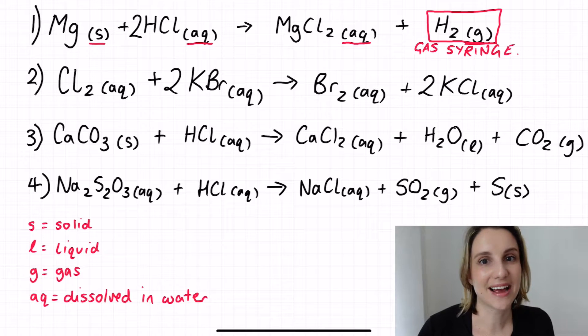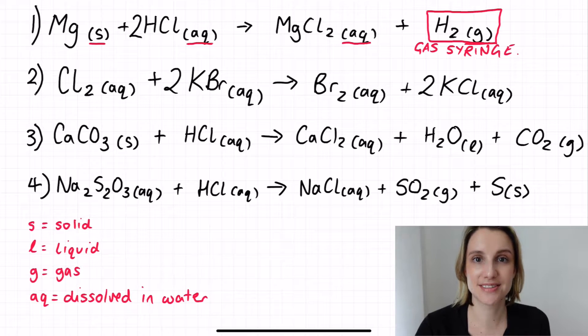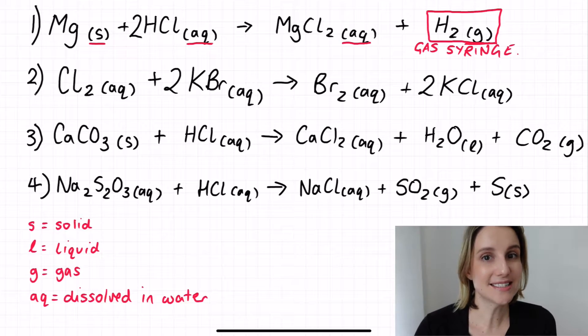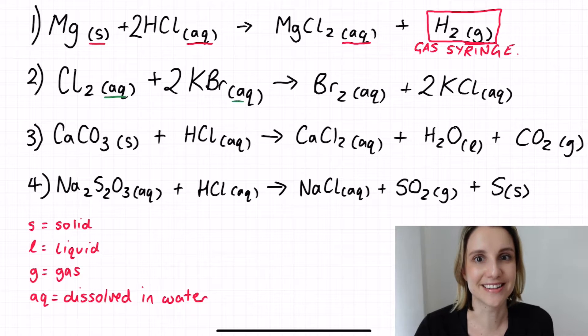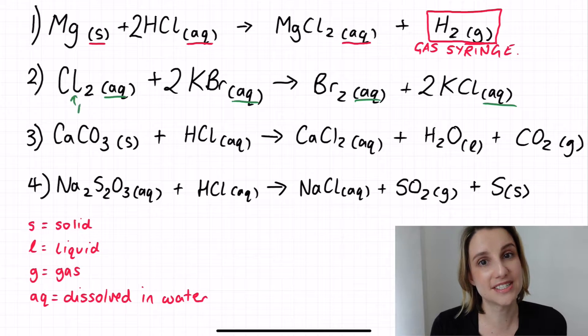Reaction number two doesn't make our life quite so easy. We can see we've got two aqueous things on the left and two aqueous things on the right. So state symbols are not helping me out in this case. Instead I'm going to have to look for something else that might be able to help me to see this reaction proceeding.